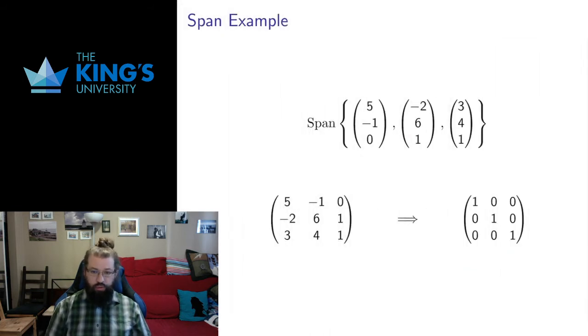Let's do some examples. Here's a span of three vectors in R3. I take these vectors, I put them in as rows, so (7, -2, 3) becomes a row of 7, -2, 3; (-2, 6, 5) becomes a row; (1, 4, -18) becomes a row.